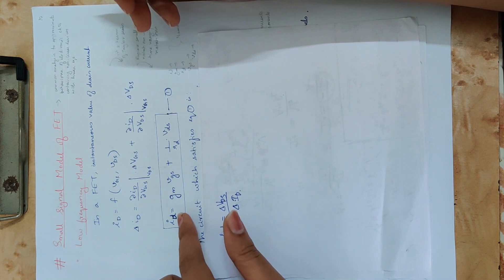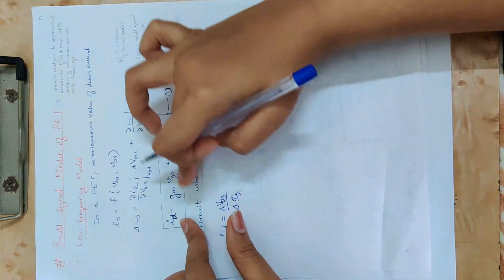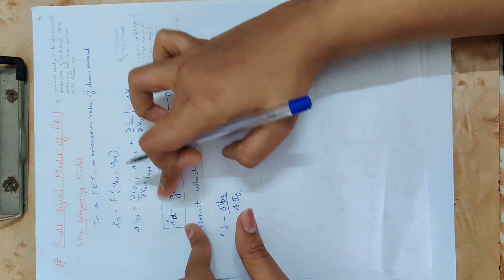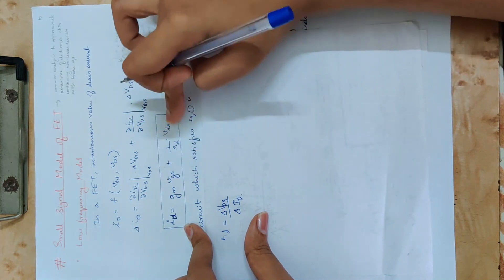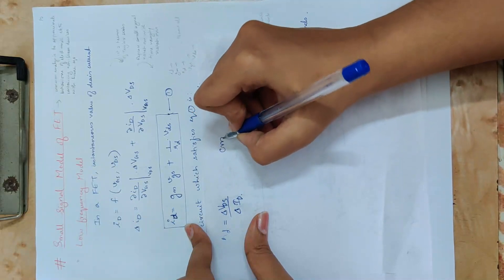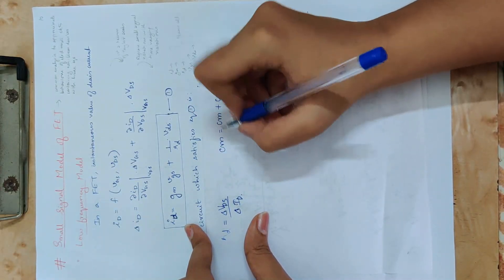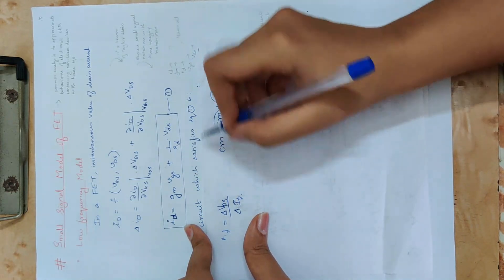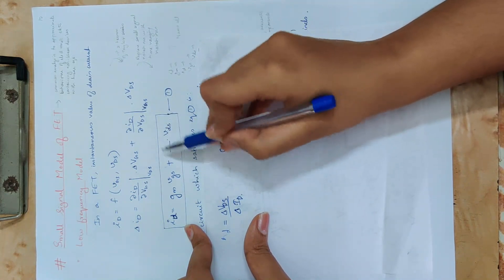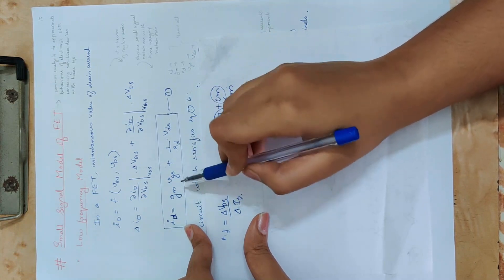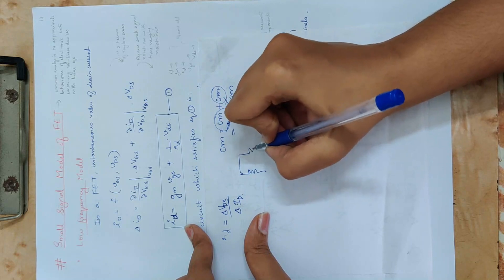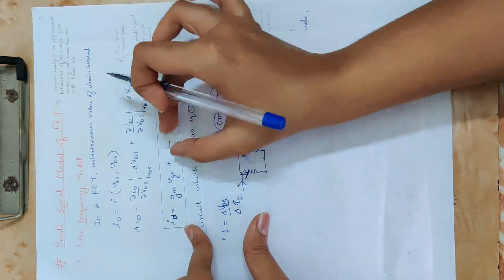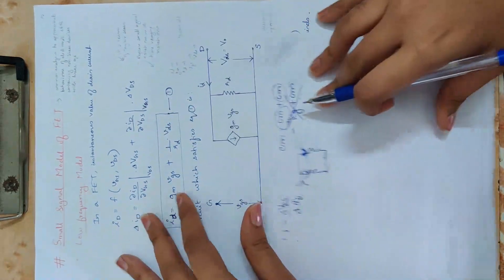On the left hand side we have current, and on the right hand side we also have two current terms summed together. All units must be the same — Ampere. This represents two elements in parallel, because the sum of currents implies a current division in a parallel connection.